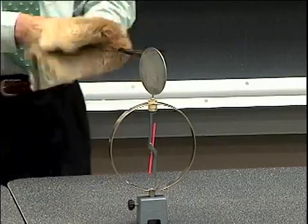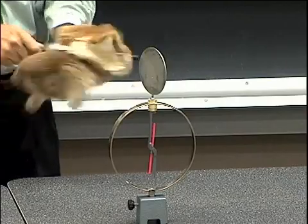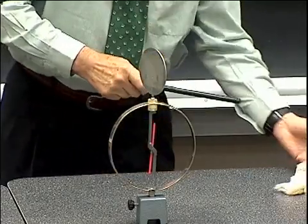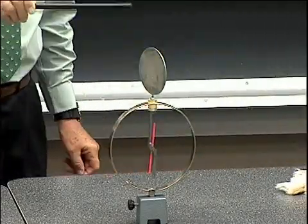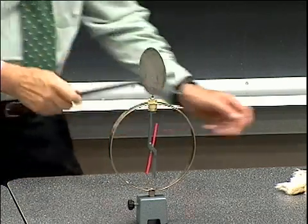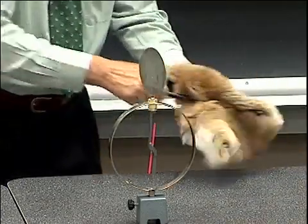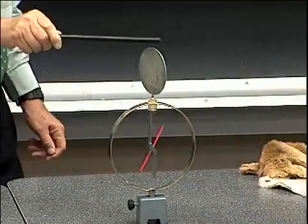So if I rub the rubber and the fur, I'm rubbing electrons from the fur onto the rubber and then if I touch the rubber to this zinc plate on top of the electroscope, then that'll drive electrons down to the movable arm as the electrons repel one another.